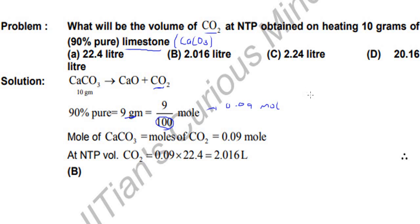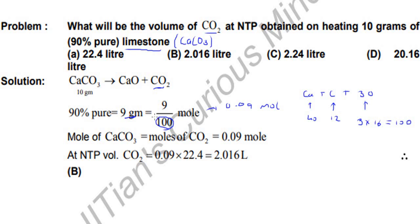We get the molecular weight by adding calcium plus carbon plus three oxygens. Calcium is 40, carbon is 12, and oxygen is 16, so 3 × 16 = 48. Adding them: 48 + 12 + 40 = 100. So 9 grams equals 0.09 moles of calcium carbonate.